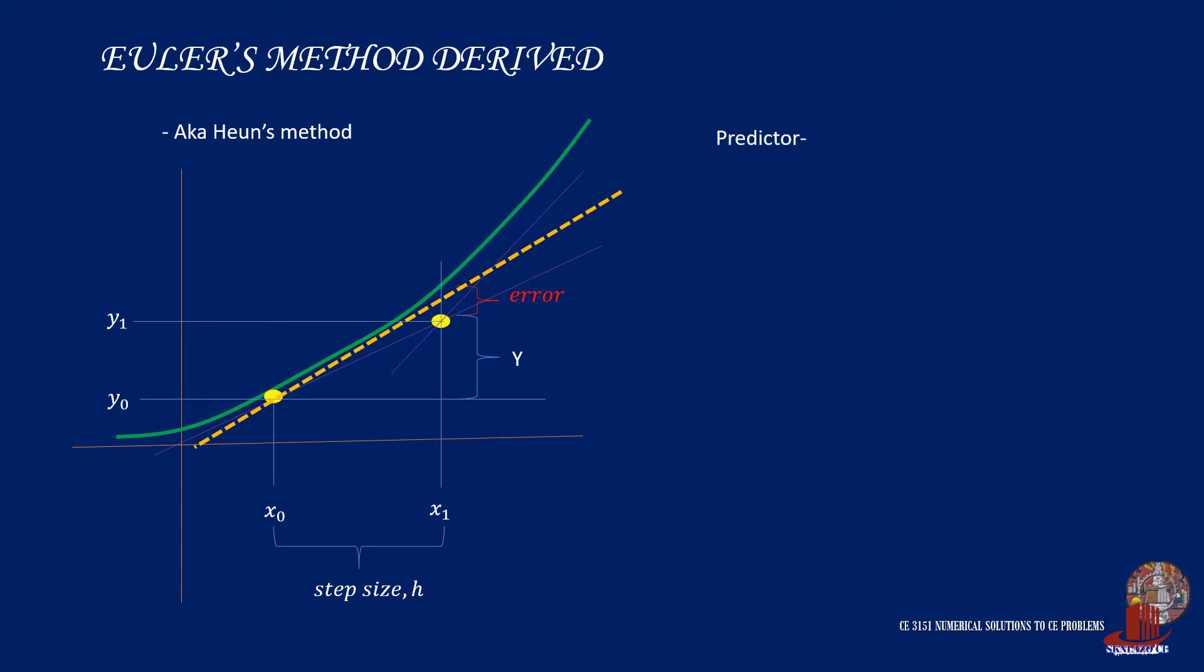This method uses the predictor-corrector approach where we are to take the solution of the two original tangents. The first tangent is that from the first point with coordinates x0 and y0. So, the slope dy over dx is the function of x0 and y0. The second tangent is derived from point x1 and y1, so the slope is with their function.